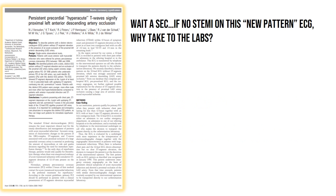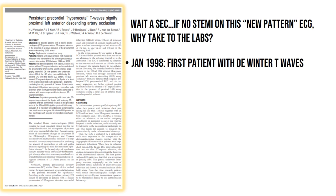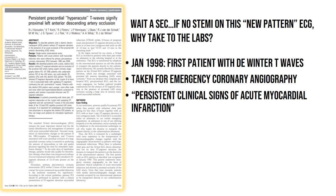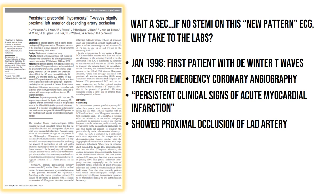Why were these patients even taken to the lab for PCI if they didn't have STEMI on their ECG? From what I can work out, in 1998, the first patient with DeWinter T-Waves on their ECG was taken for emergency coronary angiography on the basis of persistent clinical symptoms of acute myocardial infarction and showed a proximal occlusion of the LAD artery. From that time onwards at this institution, patients with similar ECG changes were routinely accepted for PCI.